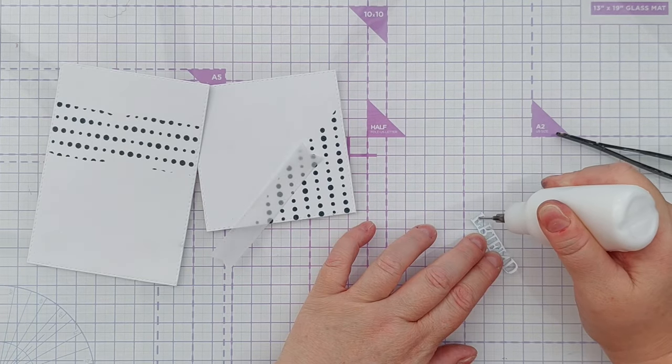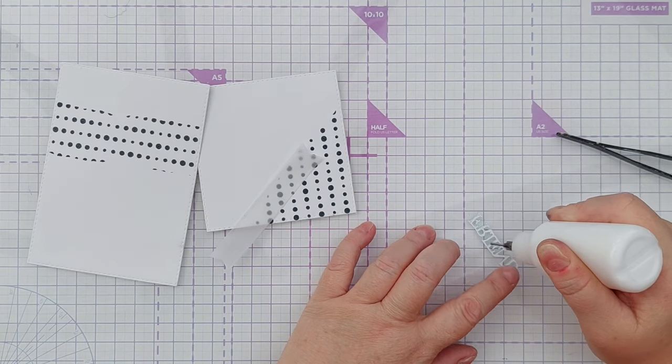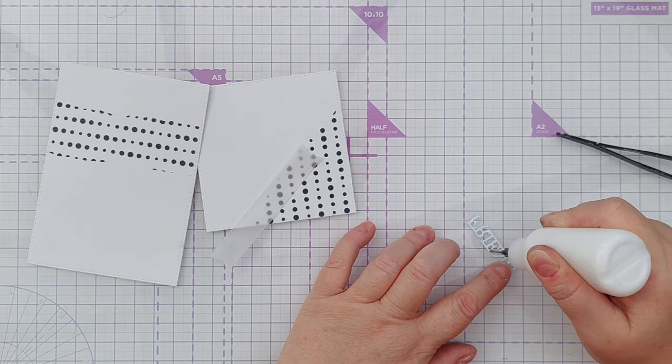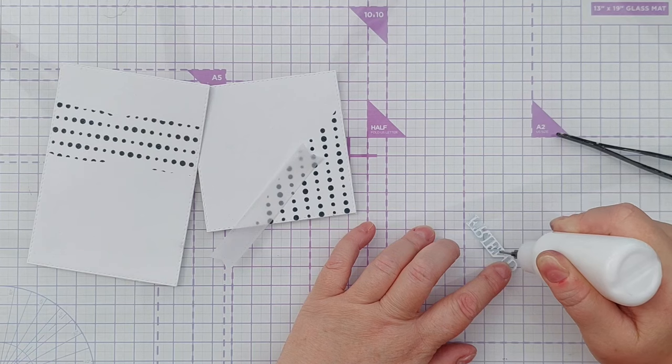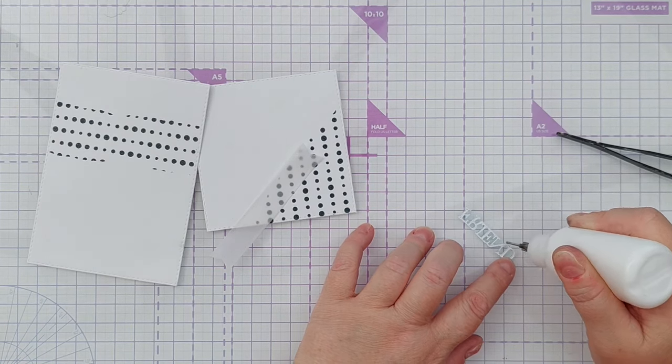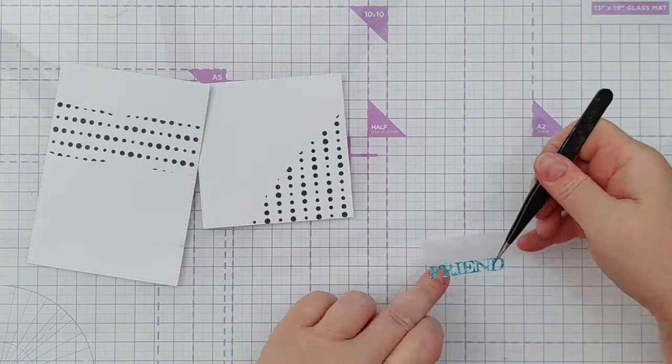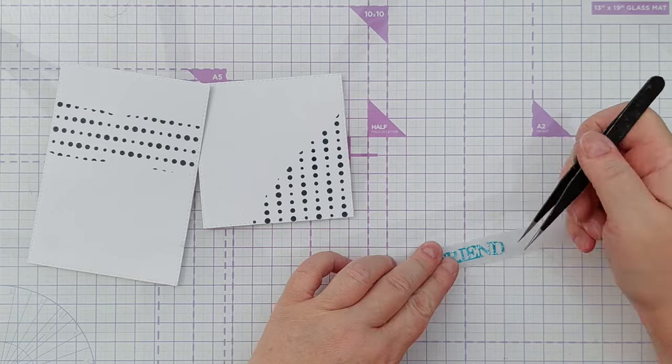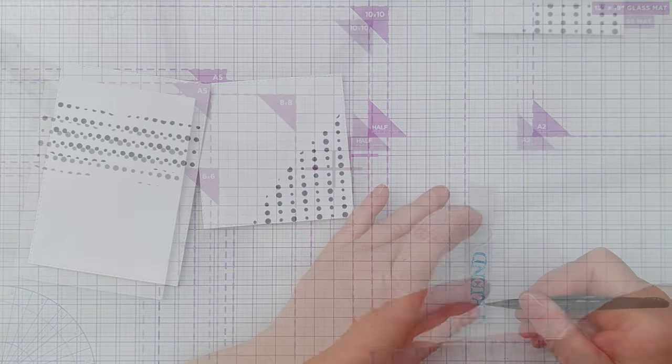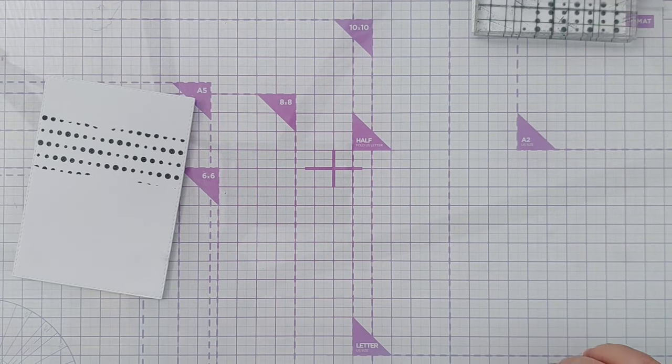And the glue I'm using to stick this to the vellum is matte gel medium because it's bound to squash out the sides and if it does, it's matte so it won't leave any glossy marks on the vellum. I'll add it on this end. I'm going to pop an acrylic block on top of that just to hold the friend down while it sticks.